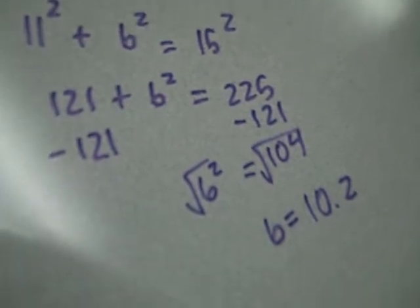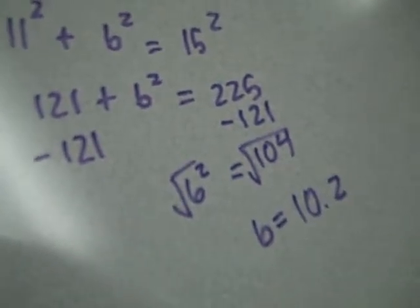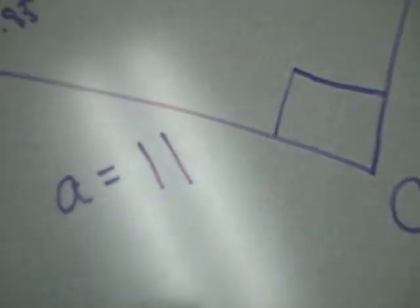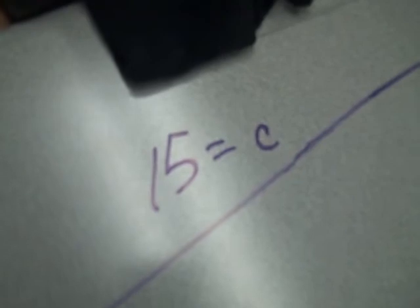We found that b squared equals 104, so B equals the square root of 104, which is about 10.2. Overall for our triangle, we have side A is 11, which was given, side C is 15, which was given, and we found side B to be 10.2.